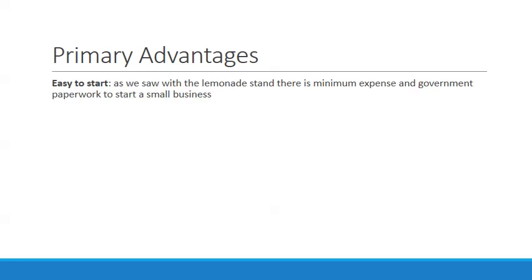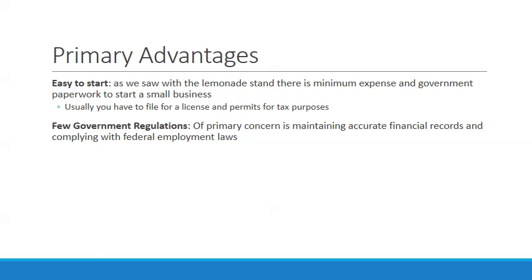The primary advantages of a sole proprietorship: first, it's easy to start. There's minimal expense, and government paperwork is small. Usually you're filing for a license and permits for tax purposes. There are few government regulations — the primary concern is maintaining accurate financial records and complying with federal employment laws. Outside of that, you have a lot of leeway.